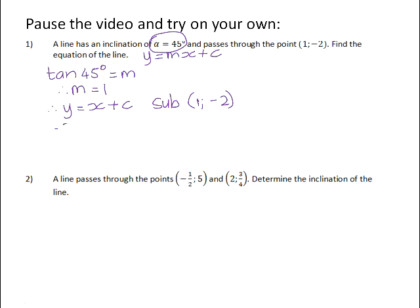So that gives us -2 = 1 + c. Subtract 1 from both sides and your c value is -3. So therefore we must make sure we give our final answer as the equation: it will be 1x - 3, which is the equation of that line.